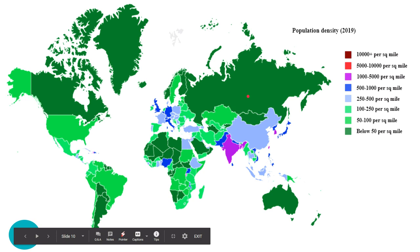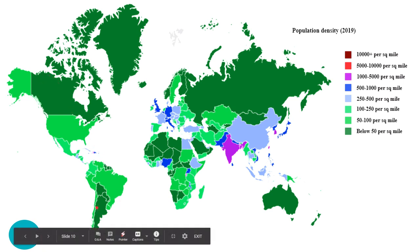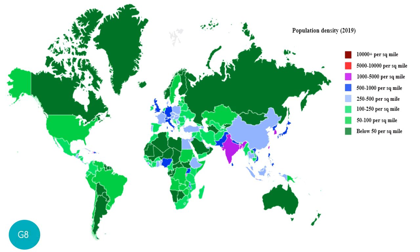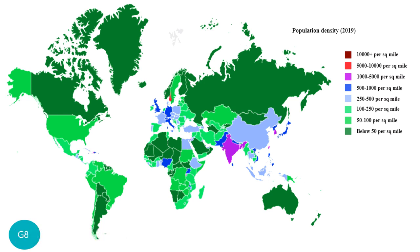Countries with low density include Australia, Russia, Mongolia, parts of Africa, Greenland, Canada, Argentina, Bolivia, Paraguay, and New Zealand — these have only about 50 people per square mile. The next range is 50 to 100, then 100 to 250 people per square mile, covering countries like the United States, Brazil, and some parts of Europe.